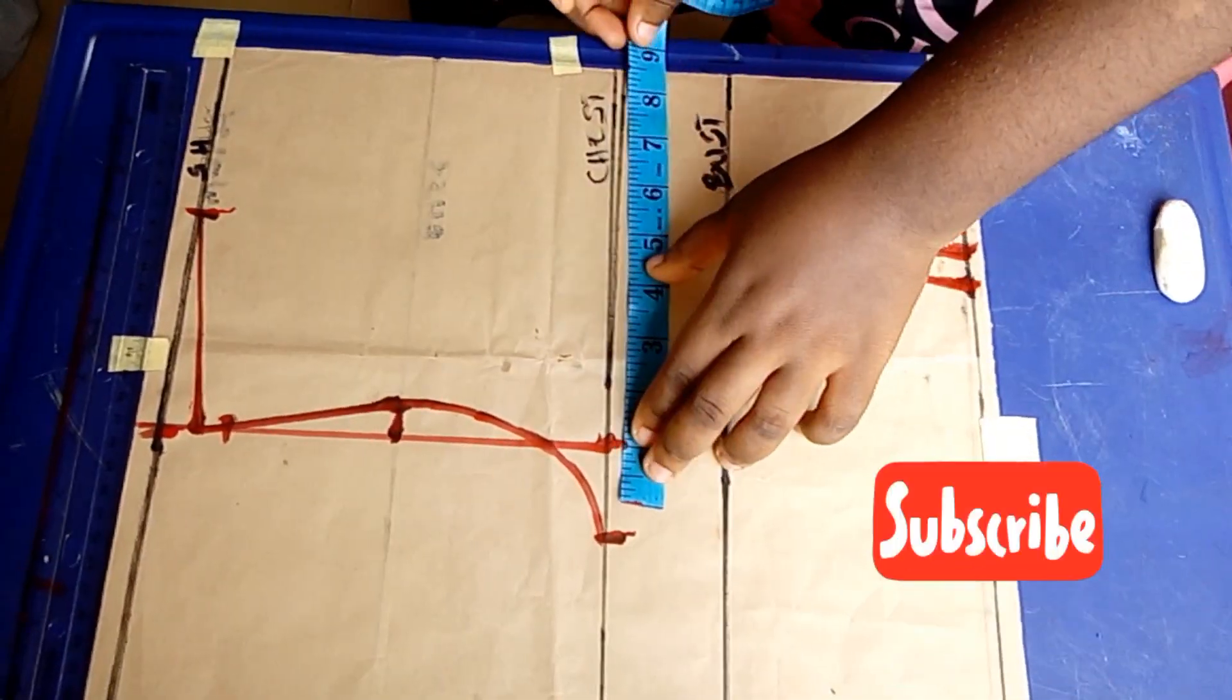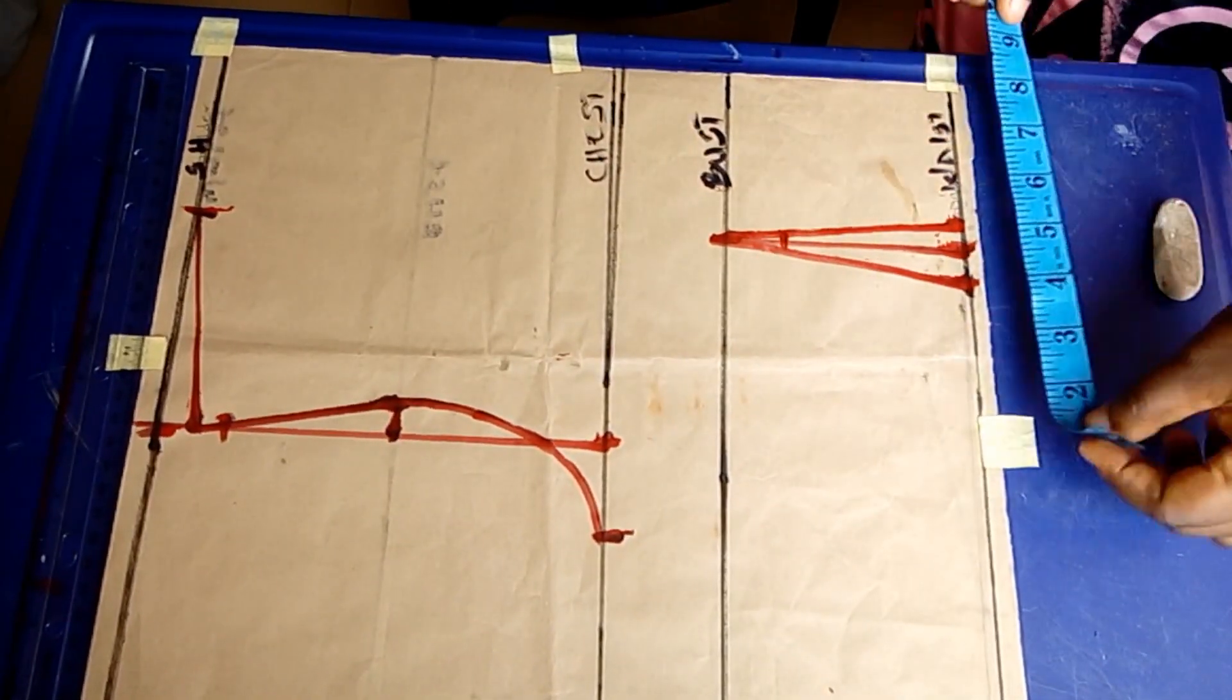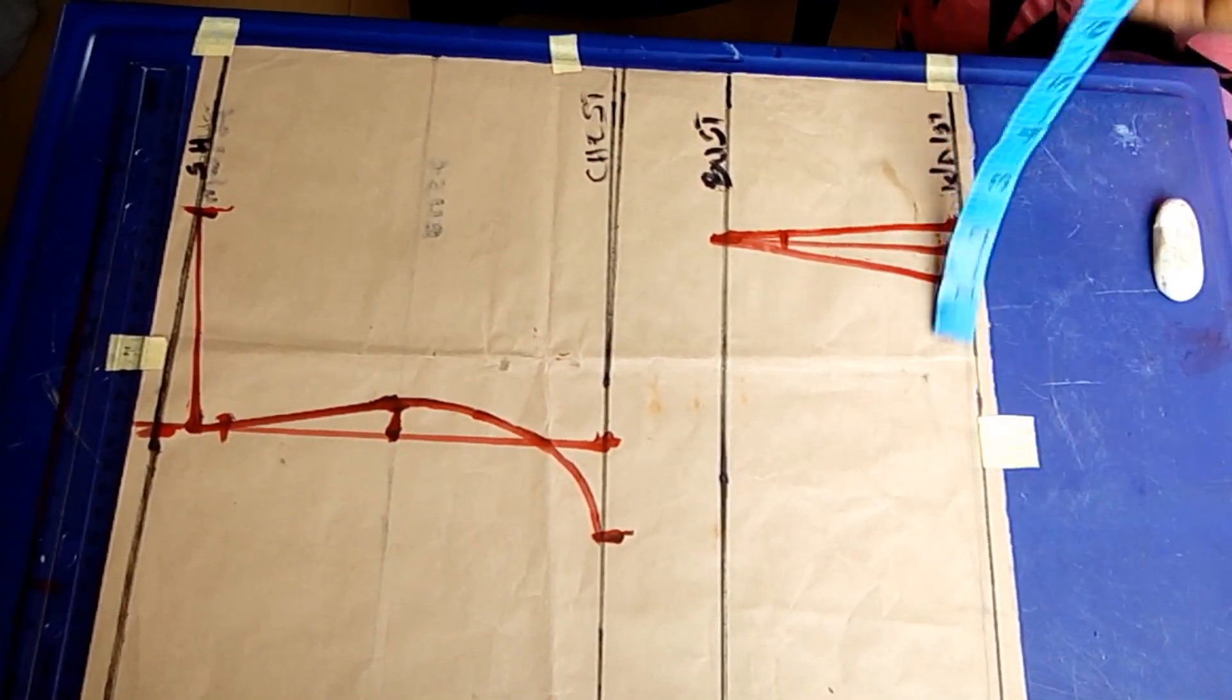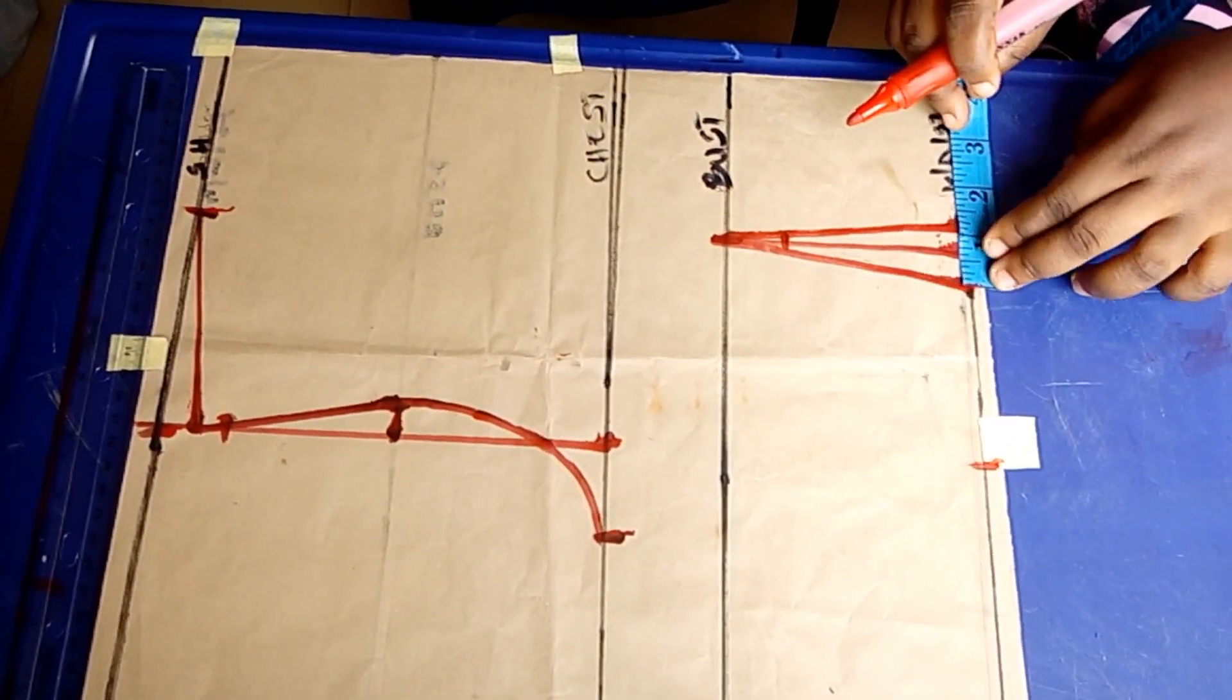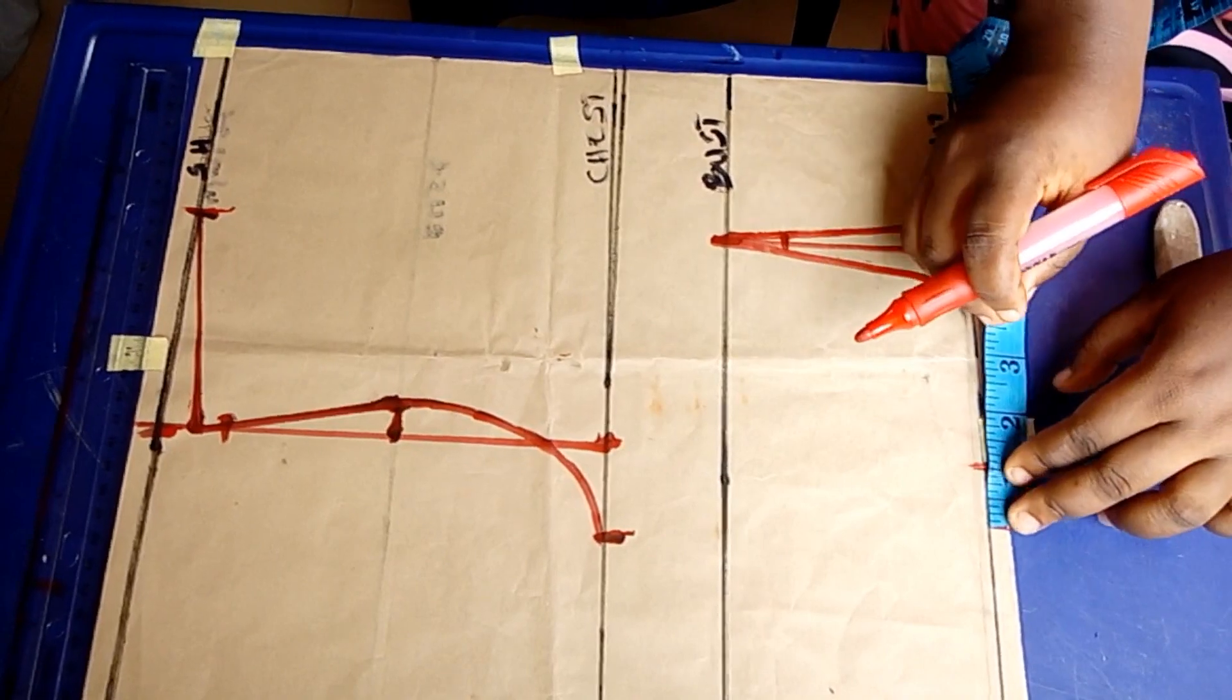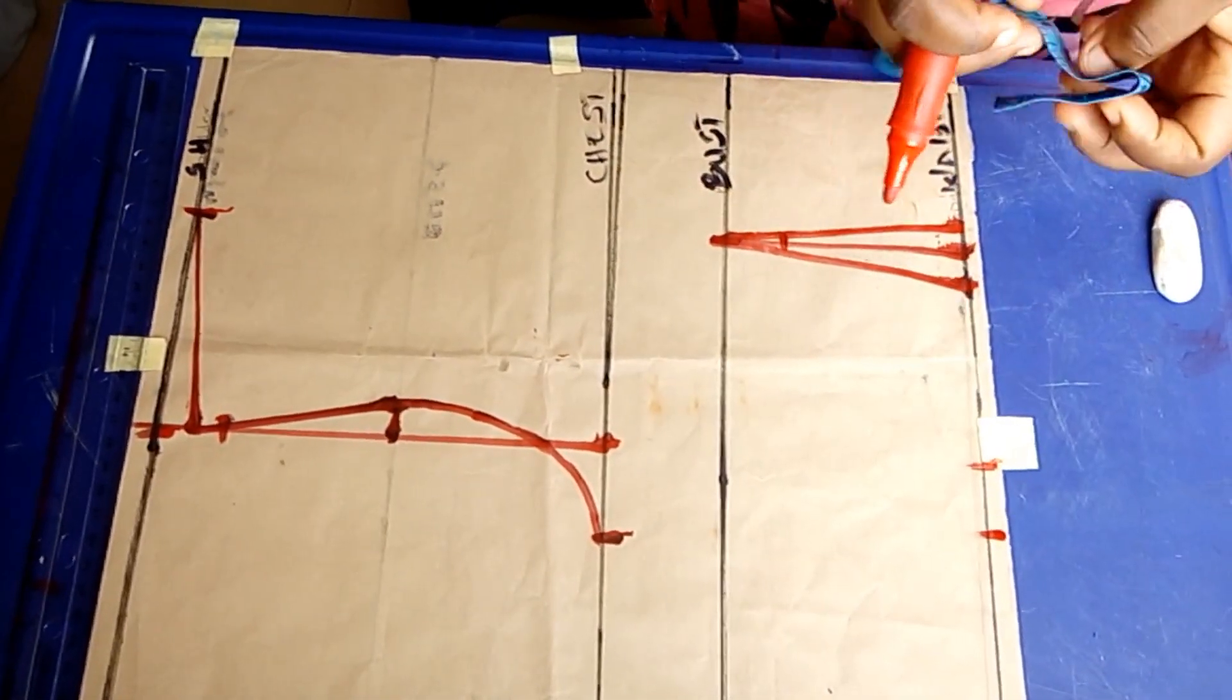Right now I'm repeating my waist measurements, which is seven and a half, that's 30 divided by four, and I'm also measuring the darts which I have there and I'm replacing it.